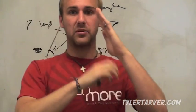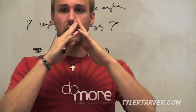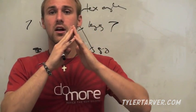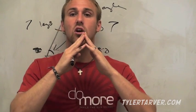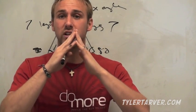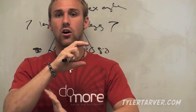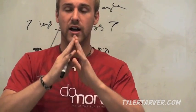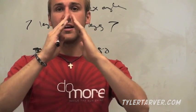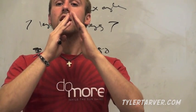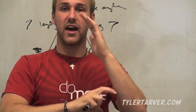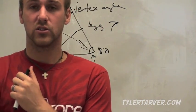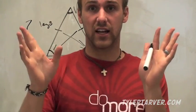The converse means you switch it. The Converse of the Isosceles Triangle Theorem states: if two angles are congruent, then their opposite sides are congruent. So the Isosceles Triangle Theorem goes legs to angles, and the converse goes angles to legs.